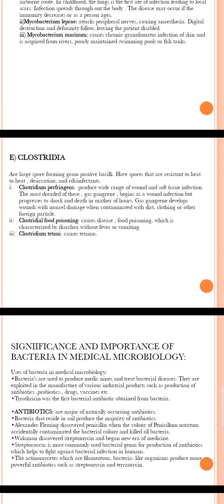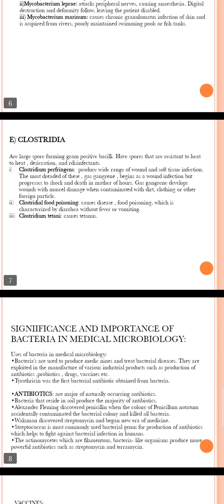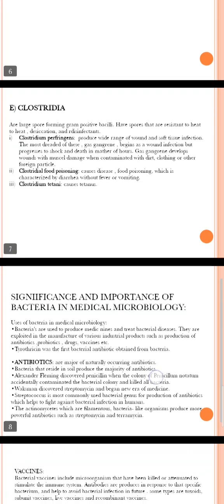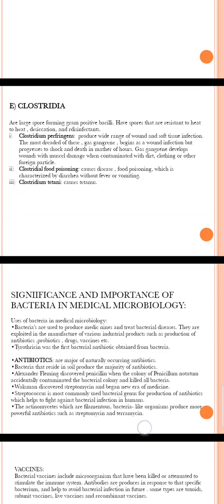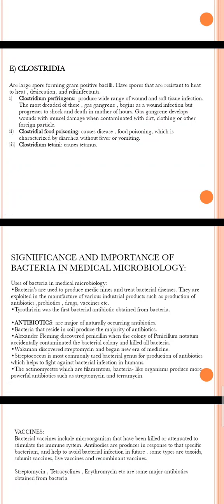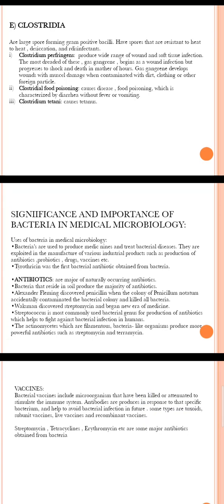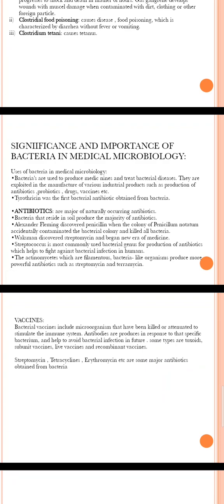The next bacteria is Clostridia. They are large spore-forming gram-positive bacilli with spores that are resistant to heat and disinfectants. Clostridium perfringens produces a wide range of wound and soft tissue infections. The most devastating of these, gas gangrene, begins as a wound infection but progresses to shock and death in a matter of hours, developing in wounds with muscle damage contaminated with dirt, clothing, or foreign particles. Clostridial food poisoning is characterized by diarrhea without fever and vomiting. Clostridium tetani causes tetanus.